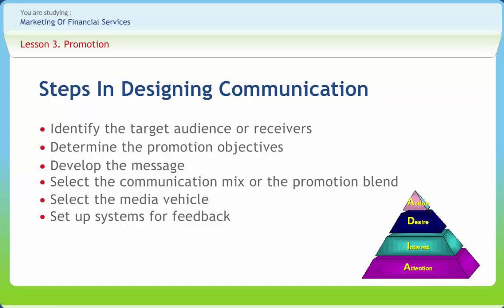Another step is to decide the media vehicle. A media vehicle is the type of communication method within a particular media. For example, in print media we have newspapers, magazines, and brochures, and in broadcast media we have TV and radio. This decision is taken keeping in mind factors like availability of money, media vehicle, type of audience, and time constraints. Finally, set up the system for feedback. The communicator should undertake two important exercises: feed-forward is a pre-test undertaken before the message is broadcast to ensure it will be received; feedback is a post-test undertaken after the message has been broadcast to ensure it was received.